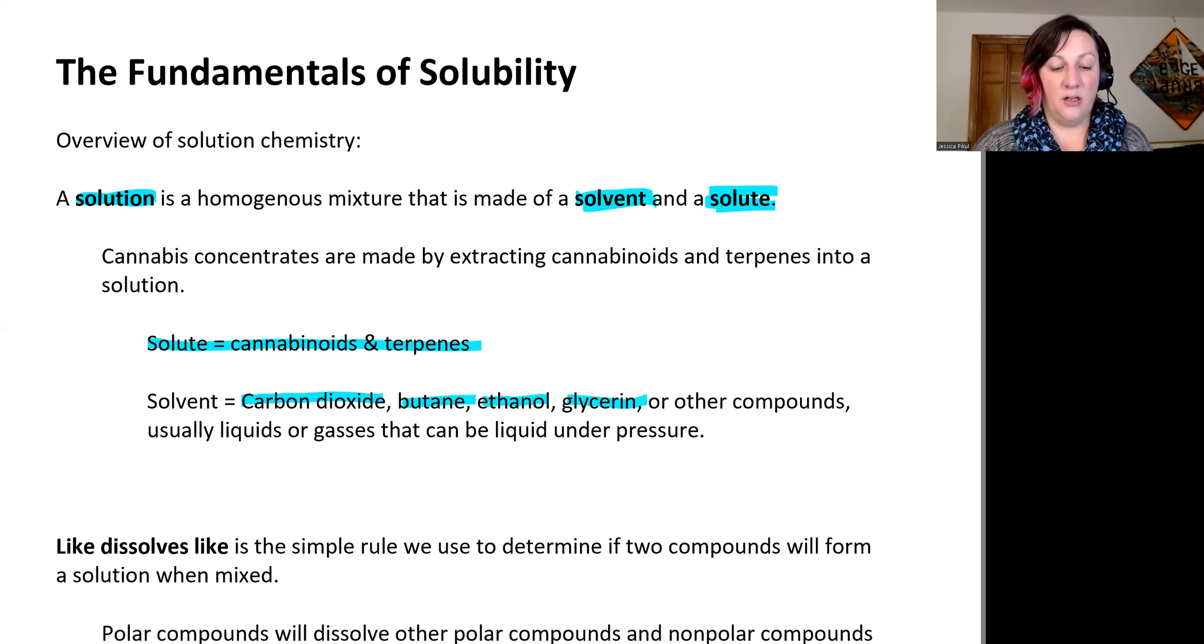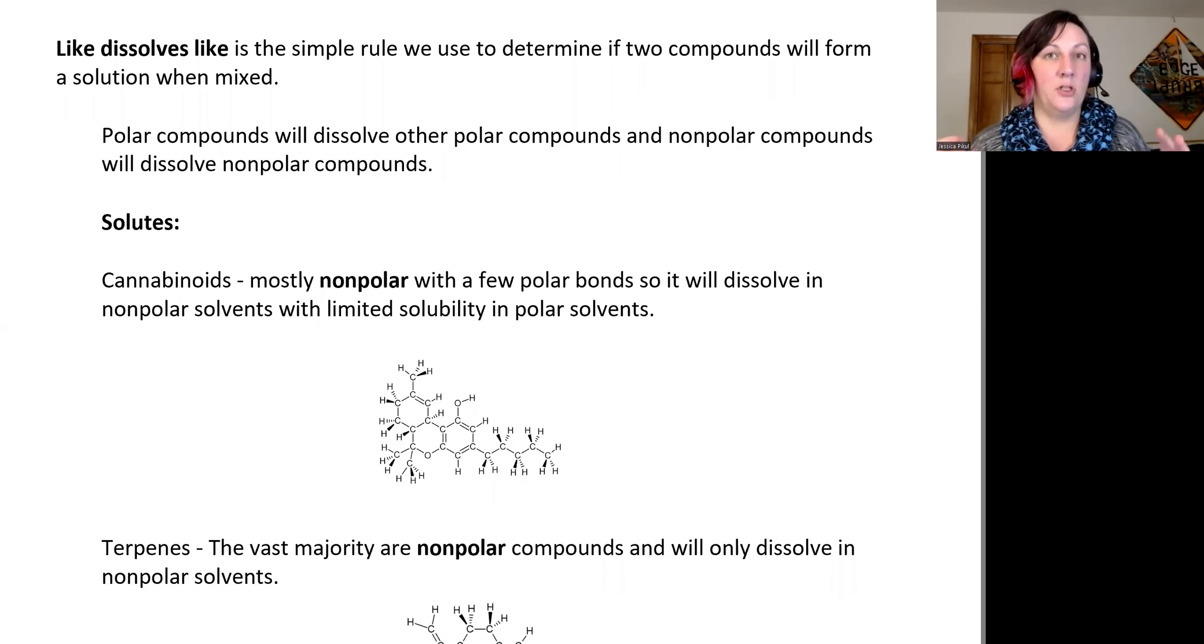So let's focus on a simple rule that we use to determine if two compounds can form a solution or not. It's like dissolves like. It's really referring to the polarity of the solute and the solvent and that they need to match, at least somewhat, for a solution to actually form and be a homogeneous mixture rather than a heterogeneous mixture where they're kind of just layered on top of each other. So we find that polar compounds will dissolve in other polar compounds and nonpolar compounds will dissolve in nonpolar compounds.